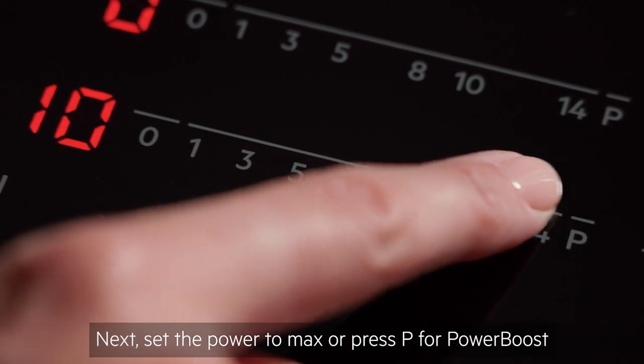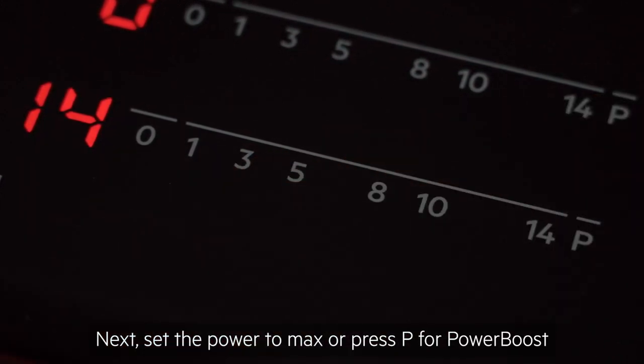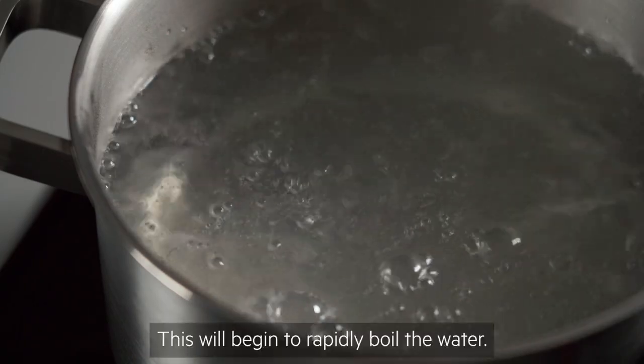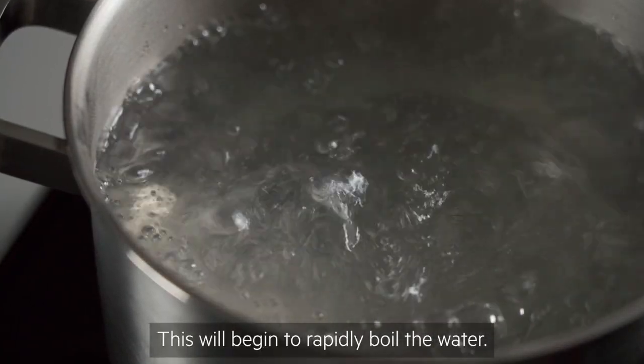Next, set the power to max or press P for power boost on your selected cooking zone. This will begin to rapidly boil the water.